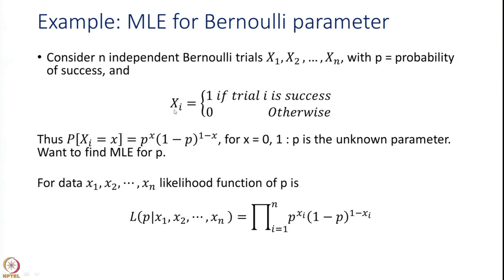In that case, xi can take a value either 1 if the trial is a success, or 0 if the trial is a failure. This is a discrete case and therefore we have a probability mass function. The probability mass function that Xi takes a value x, where x is either 0 or 1, is p to the power x multiplied by (1 minus p) to the power (1 minus x).